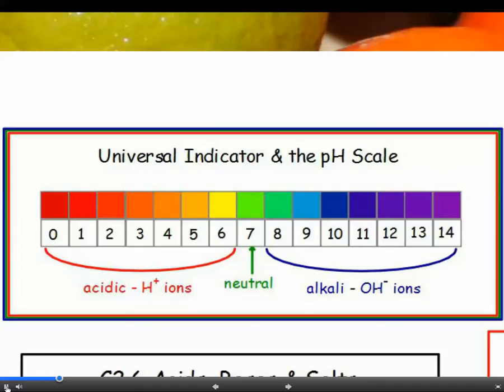Examiners are fond of asking which ion is responsible for a low or a high pH. It's the hydrogen ion, H+, that makes the solution acidic — that's low pH — and the hydroxide ion, OH-, which causes a solution to be alkaline.